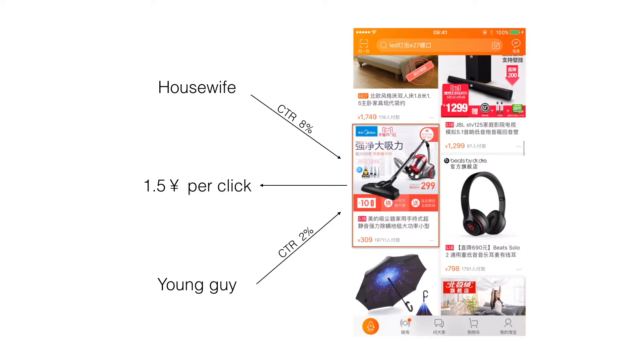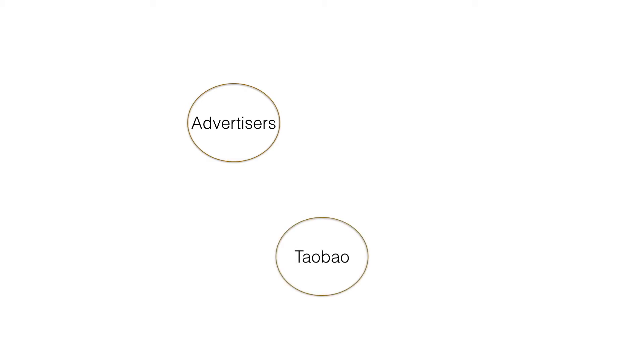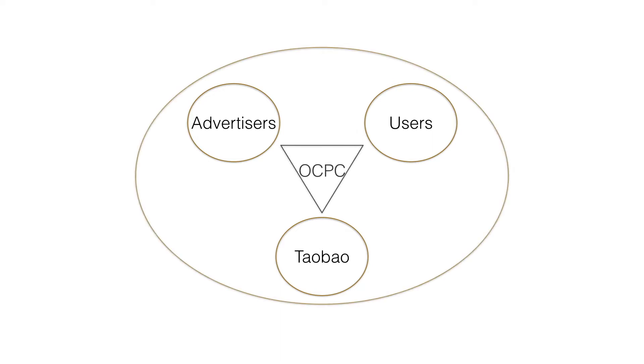We want the advertising system to automatically adjust the bid to match different page views better. Of course, things are not so easy. Besides the interest of advertisers, Taobao platform's business revenue and user experience are also very important. Thus, we propose the OCPC algorithm to solve these problems as a whole.